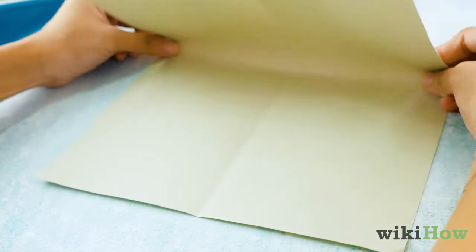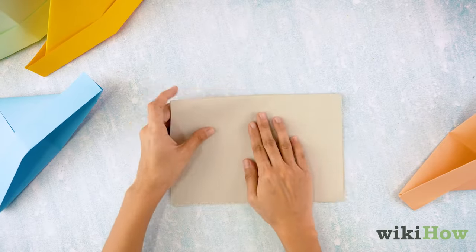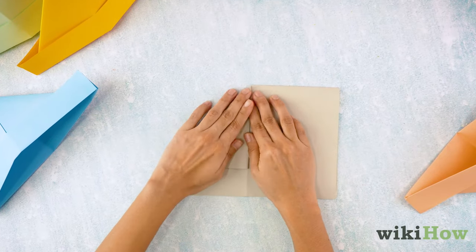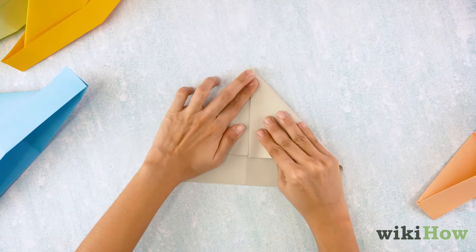Then fold the paper in half again from top to bottom. Next, fold the top left corner down to the middle crease. Repeat with the top right corner.